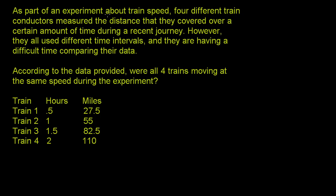As part of an experiment about train speed, four different train conductors measured the distance that they covered over a certain amount of time during a recent journey. Let's look - these are the four trains. This is how long it took them to go this many miles. However, they all used different time intervals. You see this guy did it over half an hour, this guy did it over two hours. They are having a difficult time comparing their data. According to the data provided, were all four trains moving at the same speed during the experiment?